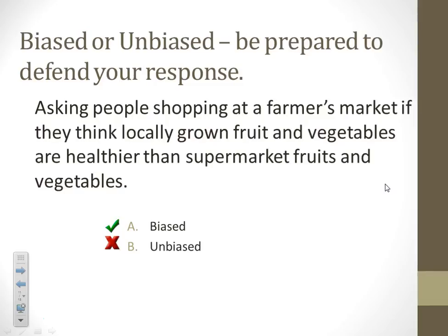How about this one: asking people shopping at a farmer's market if they think locally grown fruit and vegetables are healthier than supermarket fruits and vegetables. Why is this biased? They're asking people at the farmer's market — clearly they are there for a reason. Farmer's markets aren't necessarily very convenient, and people do it because they think those products are better. So obviously if you ask those people whether they think that's better, their answer will probably be yes. That's sampling bias — the problem is not with the question, but with who you're asking.